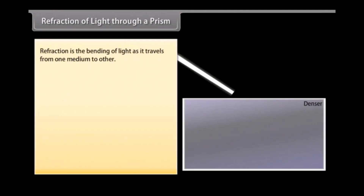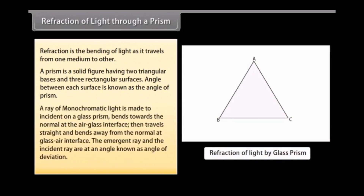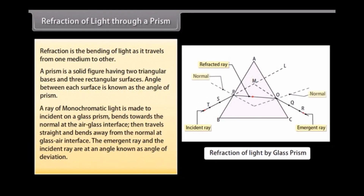Refraction is the bending of light as it travels from one medium to another. A prism is a solid figure having two triangular bases and three rectangular surfaces. The angle between each surface is known as the angle of prism. A ray of monochromatic light incident on a glass prism bends towards the normal at the air-glass interface, then bends away from the normal at the glass-air interface. The angle between the emergent ray and the incident ray is known as the angle of deviation.